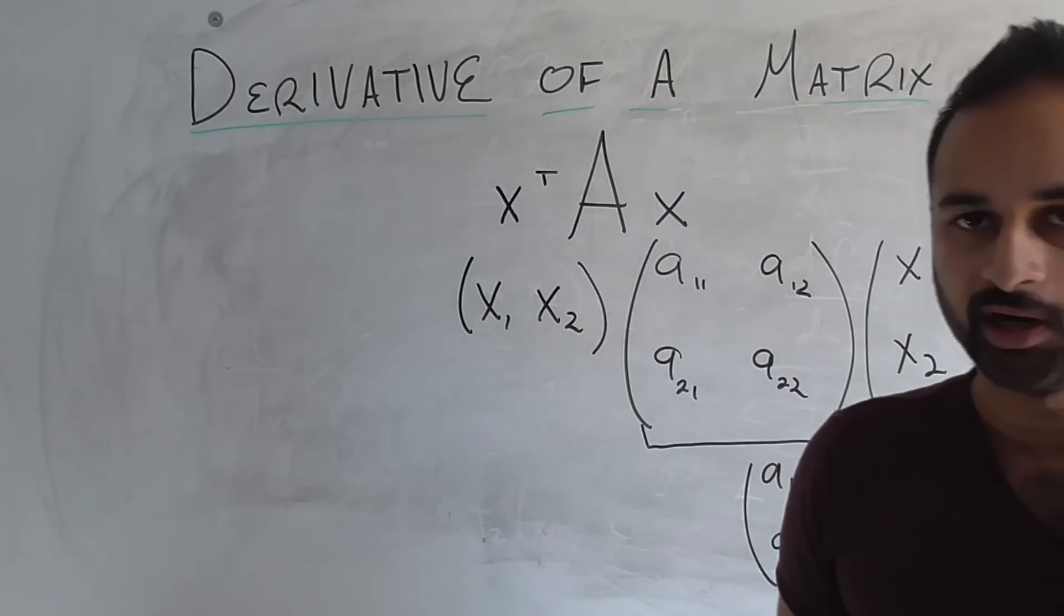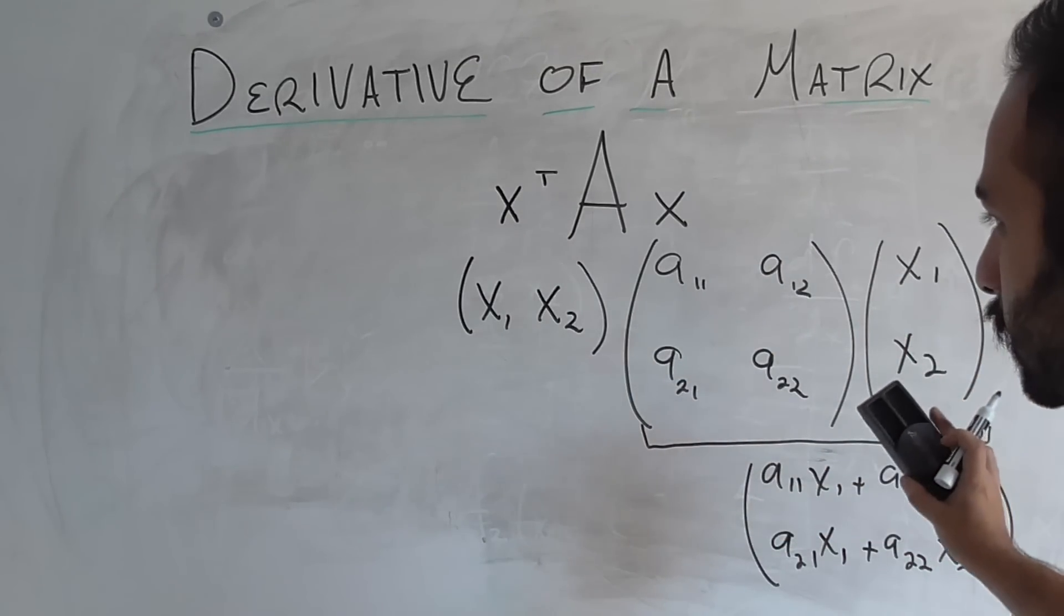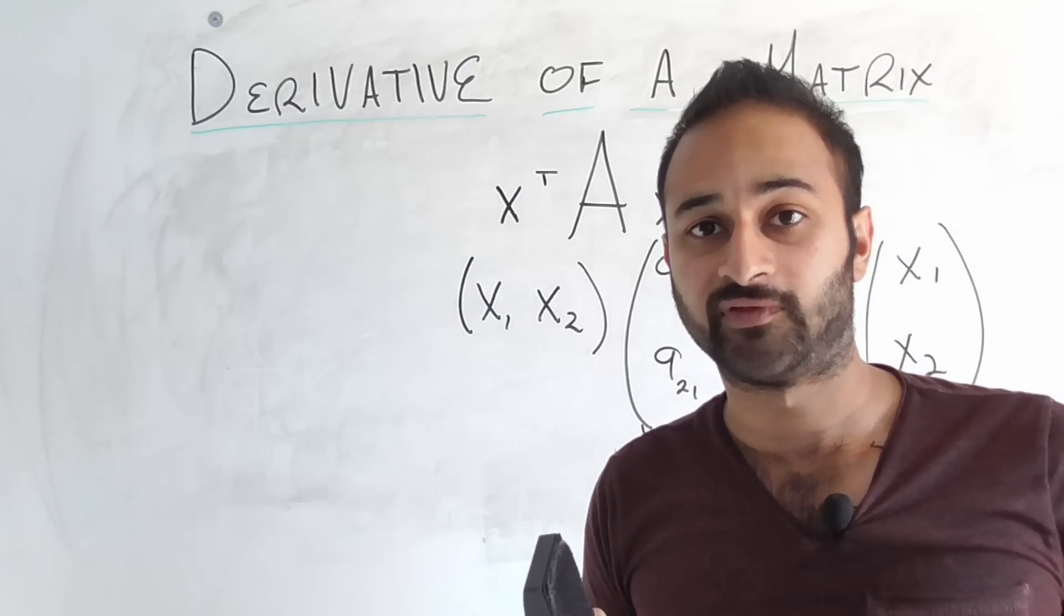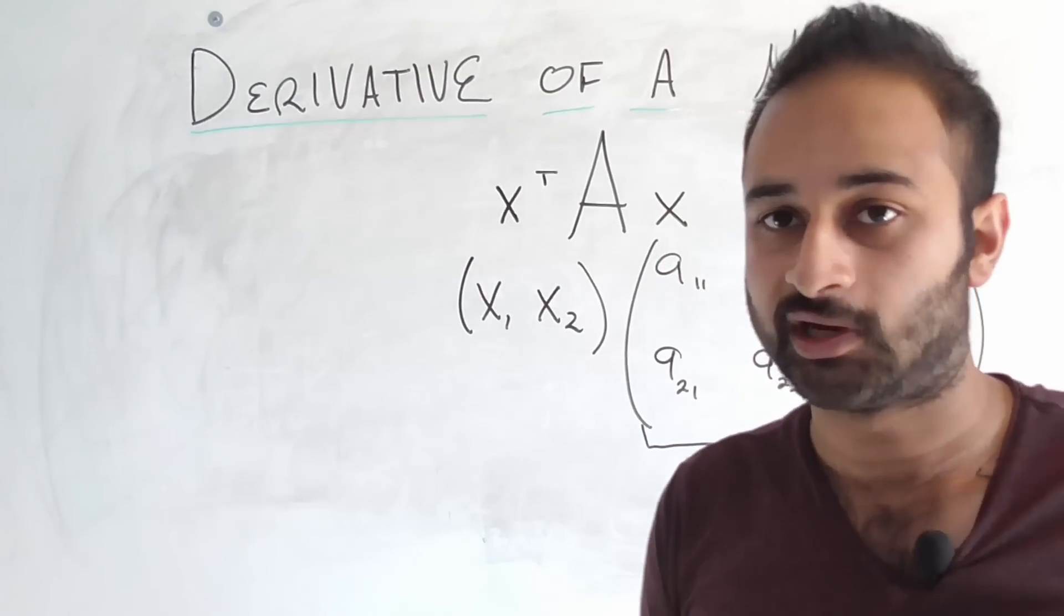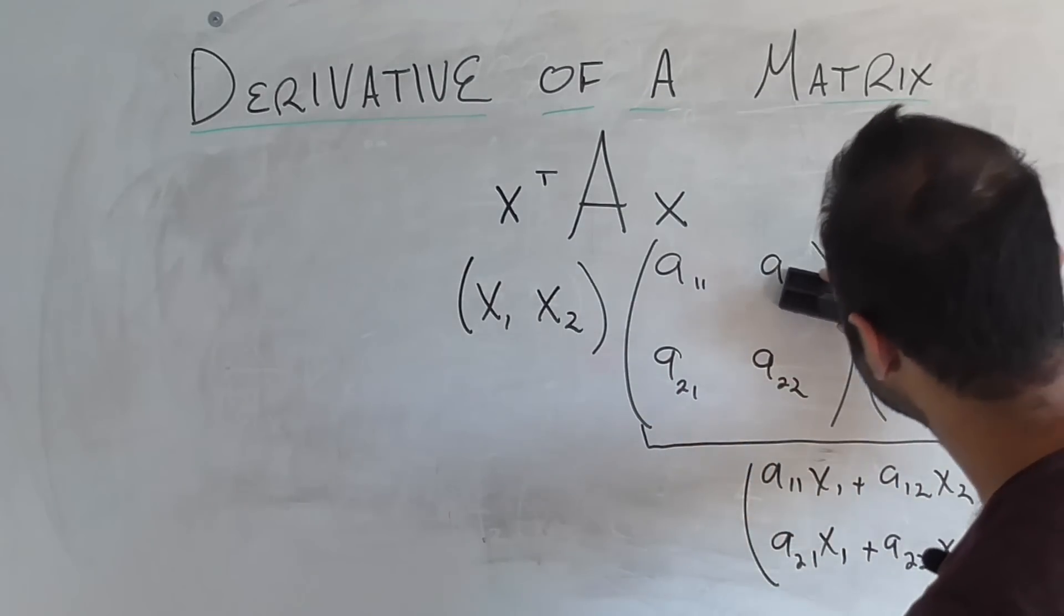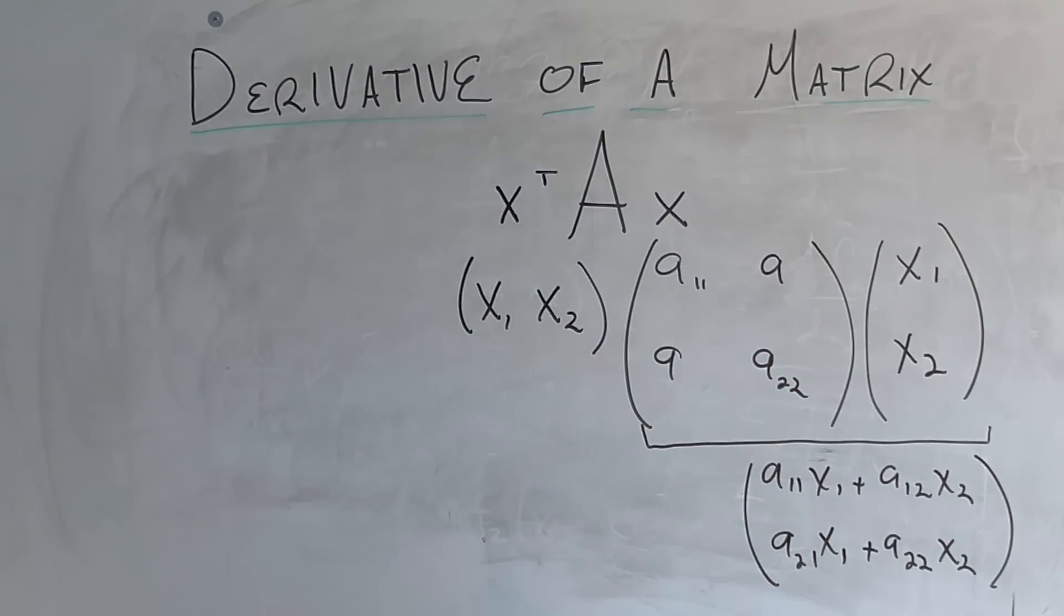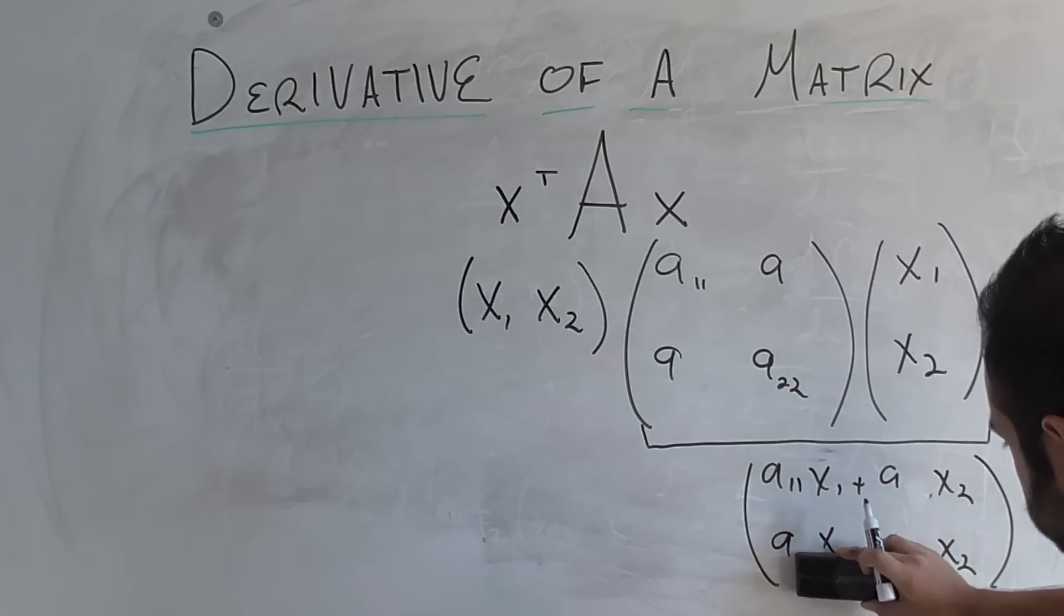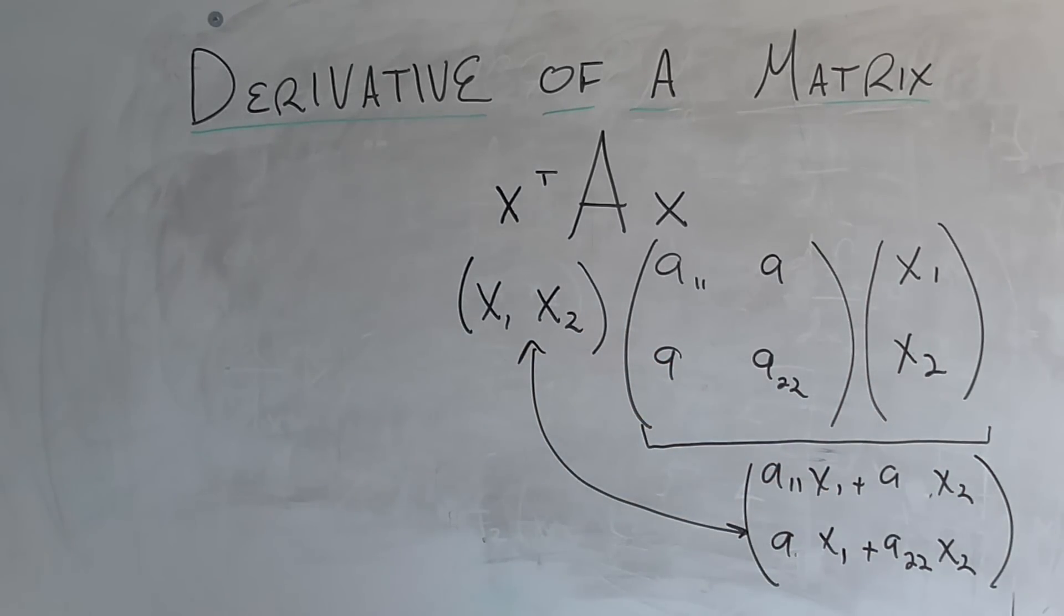The other thing I want to do here, I'm realizing this now, but I want to make sure that this matrix is symmetric. It doesn't have to be symmetric. It's just that the application we'll be looking at it in, specifically principal component analysis next, it will be symmetric. So that's going to help us understand. So instead of having a12 and a21, let's just call this guy a. Now the matrix is symmetric. So that means that this guy and this guy.